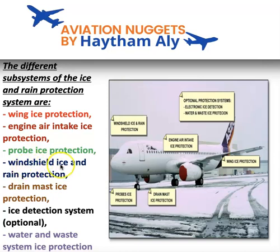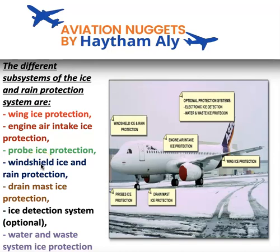For windshield ice protection, we have windshields for the captain and first officer, each with three windows: the front windshield, a sliding side window, and a fixed side window — all electrically heated. We have two window heat computers, one for the captain side and one for the first officer side. The windshield is protected from overheating by a main sensor and a spare sensor, and windows are heated at low power on the ground and high power in flight.